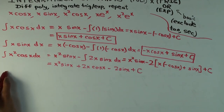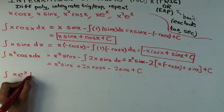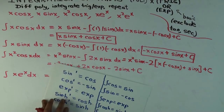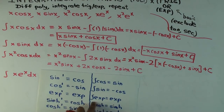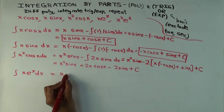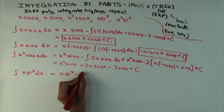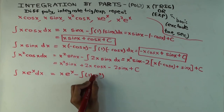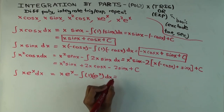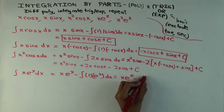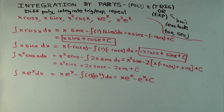Let's do ∫x eˣ dx. Since the derivative and integral of eˣ are both eˣ, we get x · eˣ minus the integral of 1 · eˣ dx, which is just x eˣ − eˣ + C. We've now done four of the five examples.